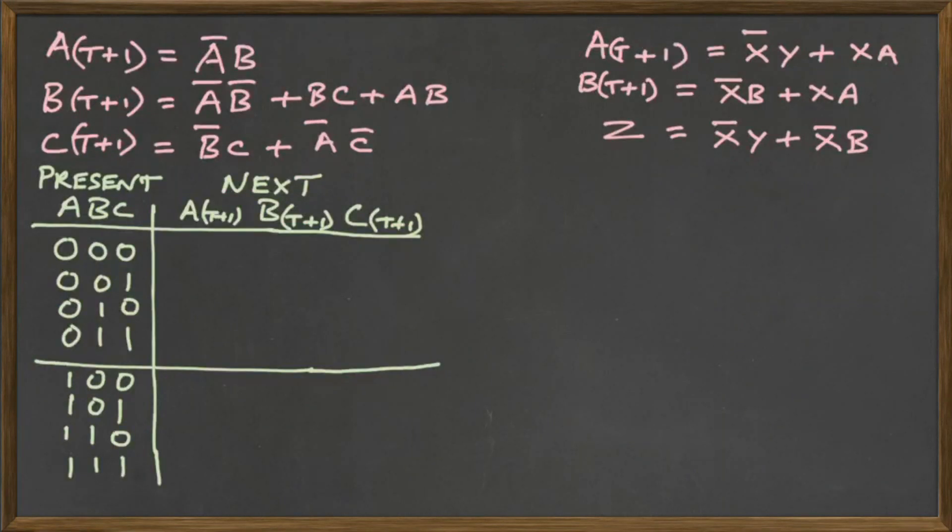We're going to fill out the table in stages. First we deal with the A(t+1) which has two ones when A is a zero and B is a one. Then we go to the B(t+1) which has, first of all, two ones when both A and B are zero. Then when B and C are both one we get those two ones. And then when A and B are both one, we get those two ones.